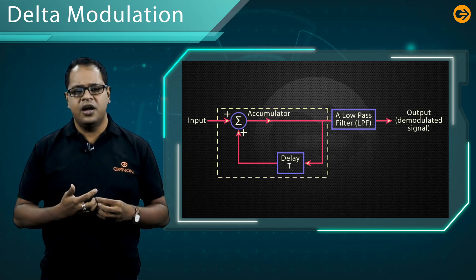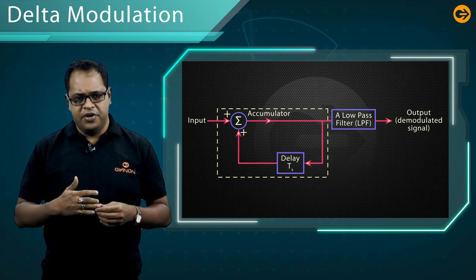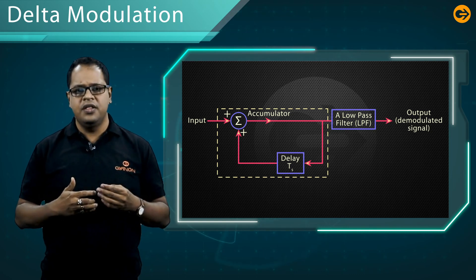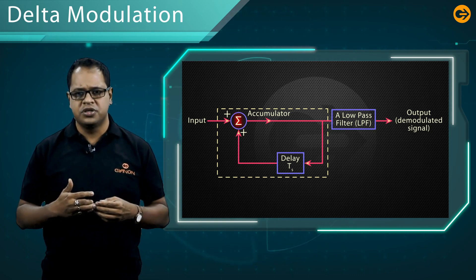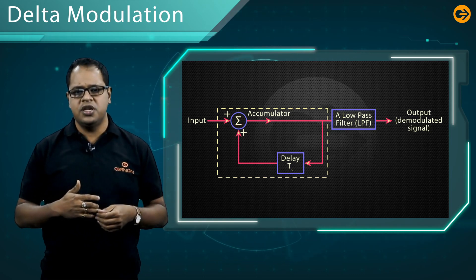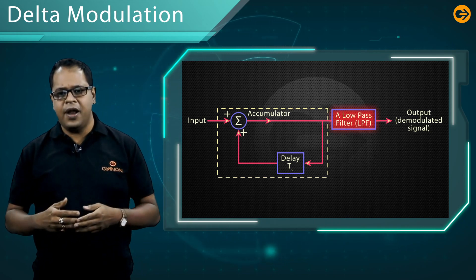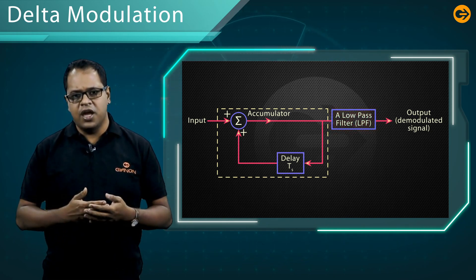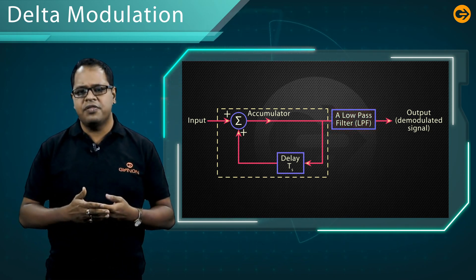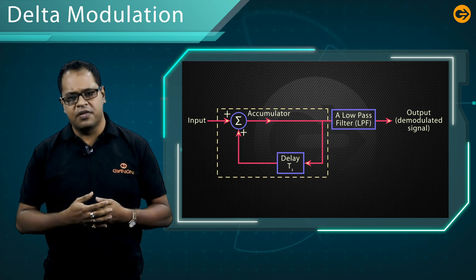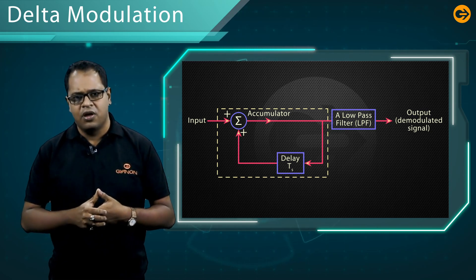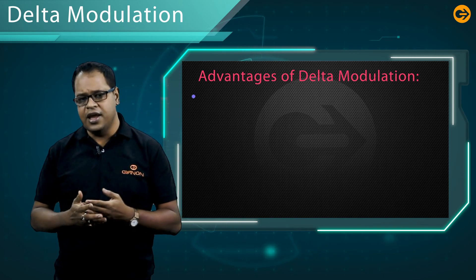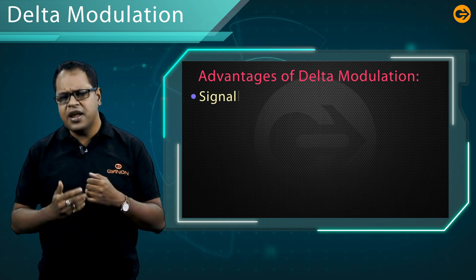Now let us discuss the delta modulation receiver. The delta modulated signal is summed with the original signal and then applied to a low-pass filter. In this way the original message signal is retrieved back.